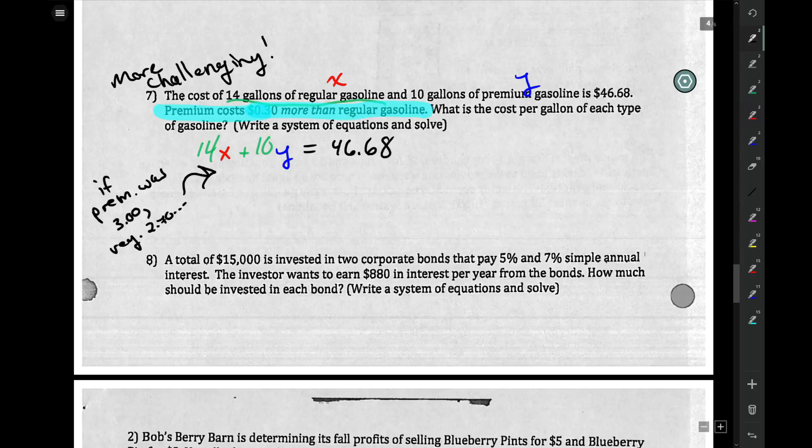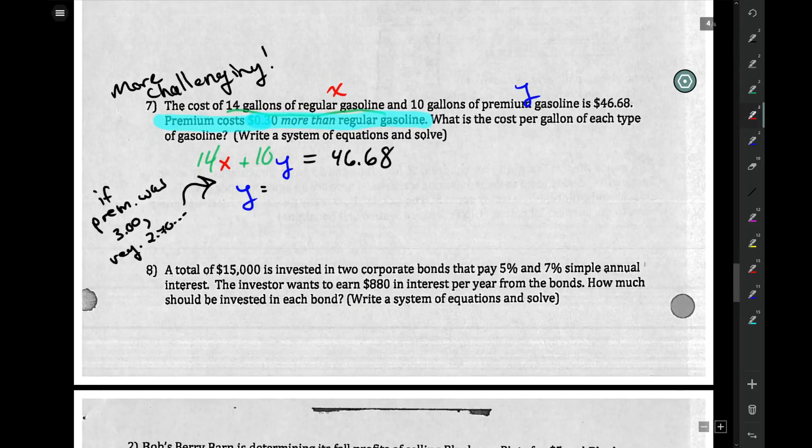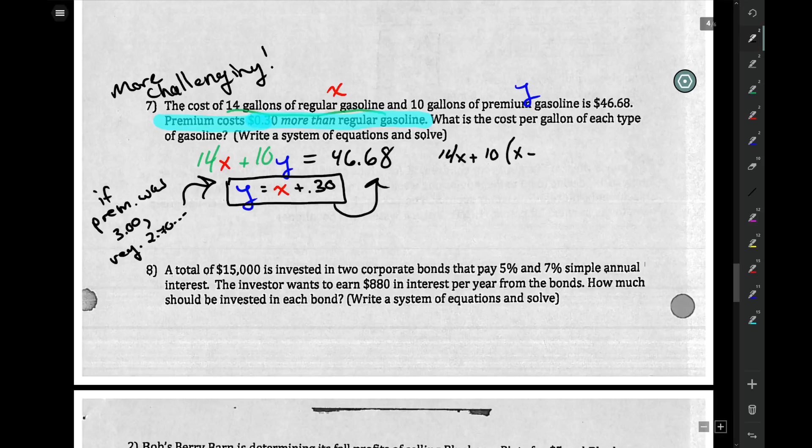Algebraically speaking, premium is y, correct? Yes. So if y is some number, then in order to get it, you're just doing x plus 0.30. That's your extra information. Premium gas is regular gas plus 30 cents more. So use substitution. 14x plus 10 times x plus 0.30 equals 46.68. And you can continue down to that.